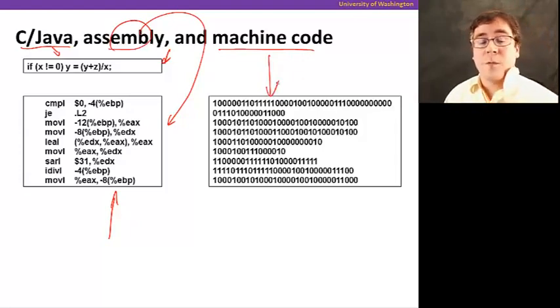So the machine code is just a sequence of zeros and ones. Processors only understand zeros and ones. It interprets them in different ways.